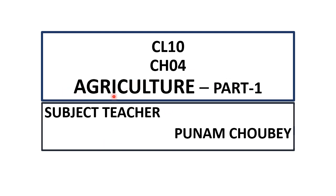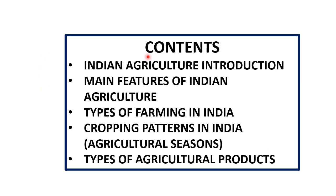Hello everyone, today we are going to start a new chapter — Agriculture, Chapter 4, Part 1. In this part we will see Indian agriculture introduction, then main features of Indian agriculture, afterward types of farming in India, then cropping pattern in India meaning agricultural seasons, and after that we will see types of agricultural products.